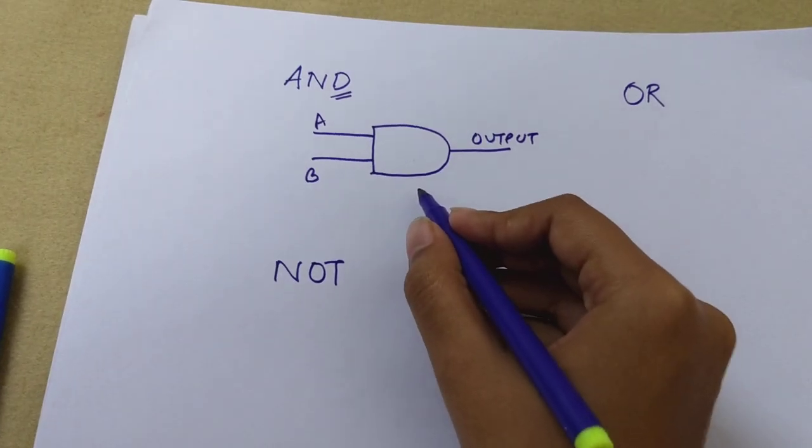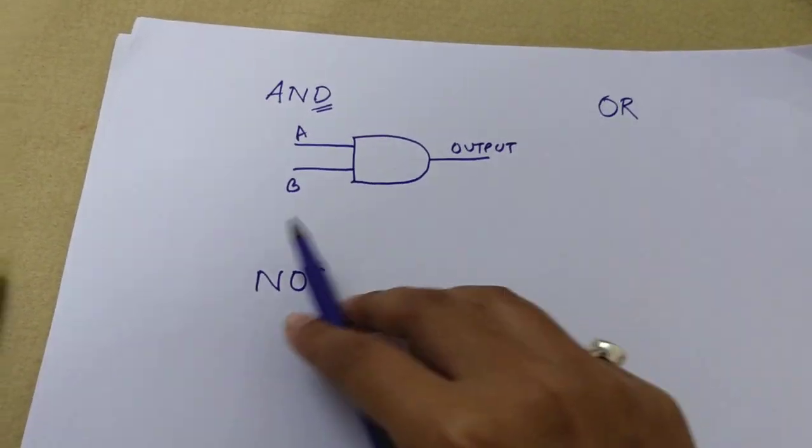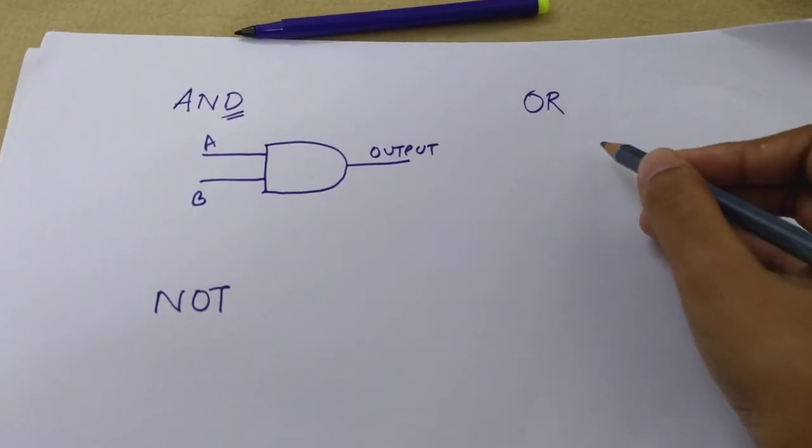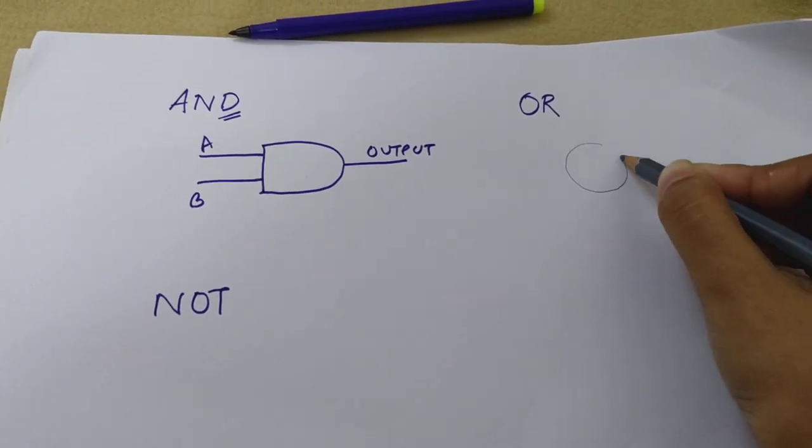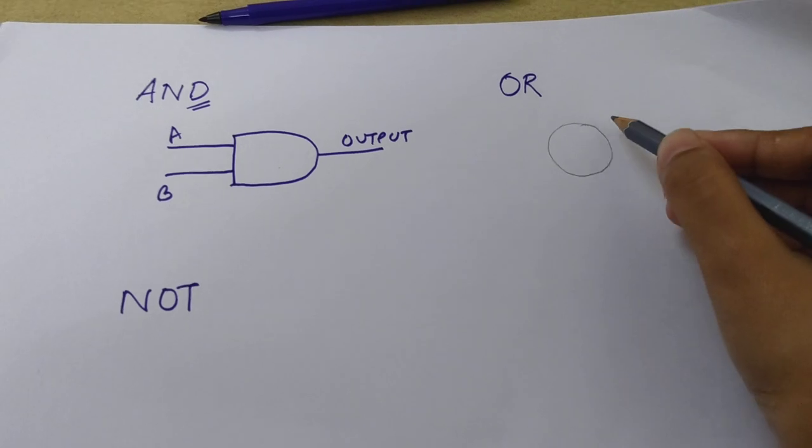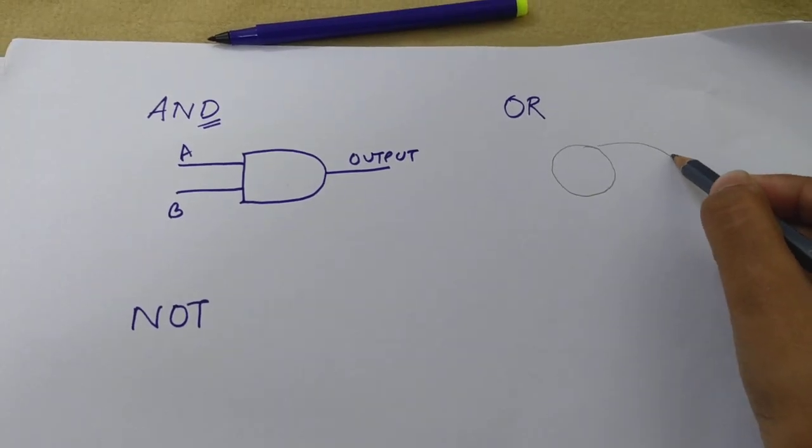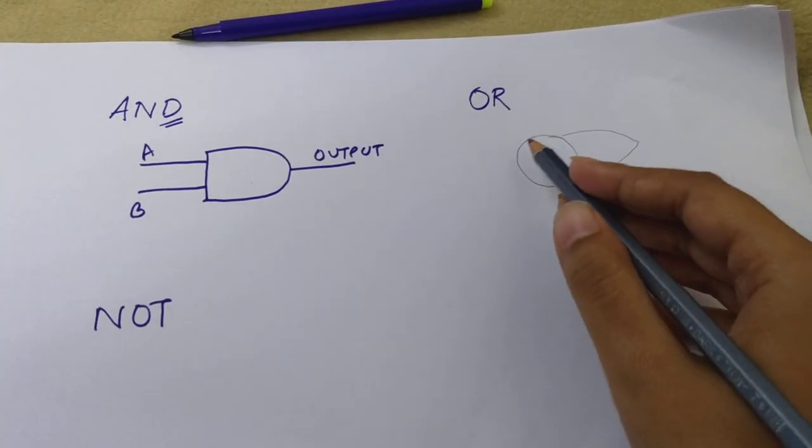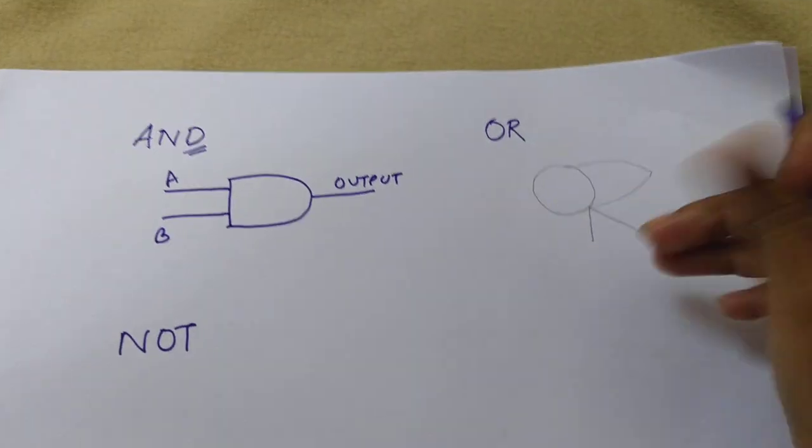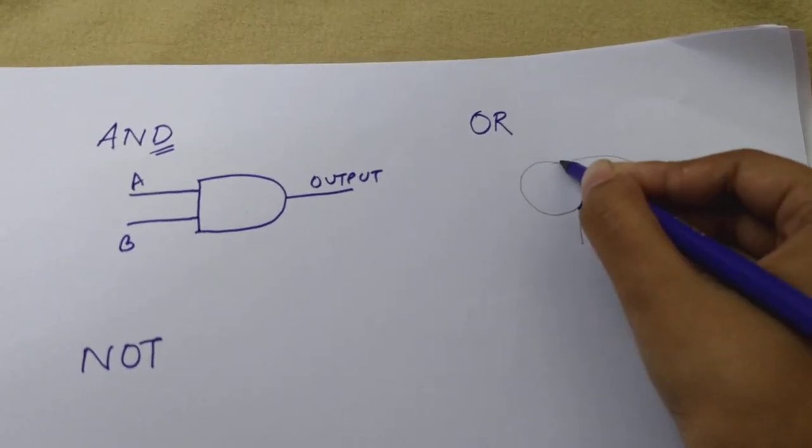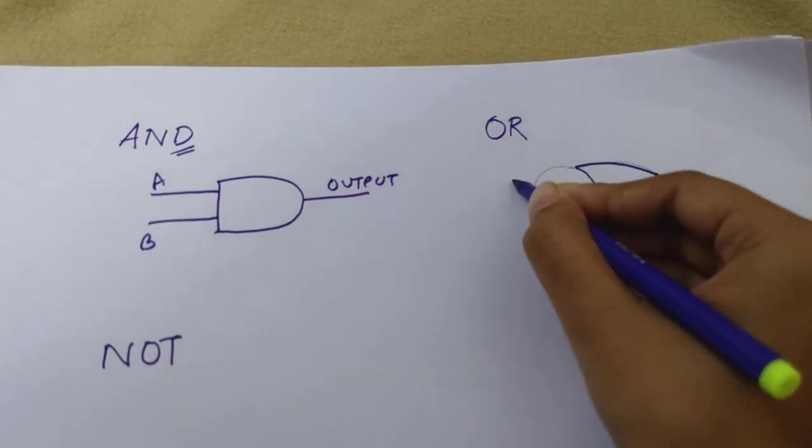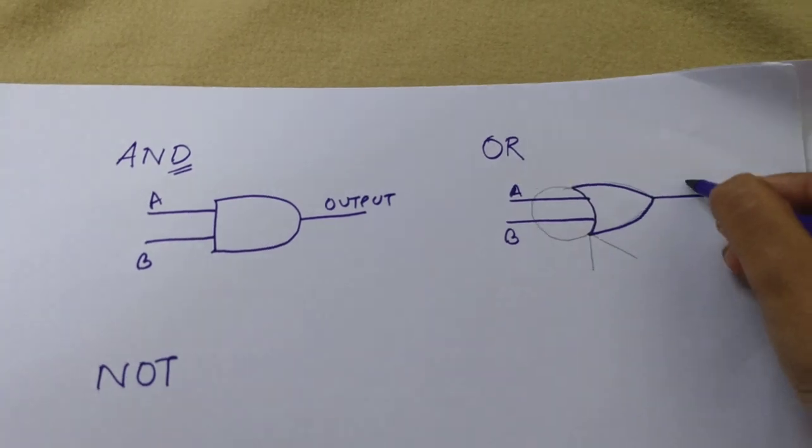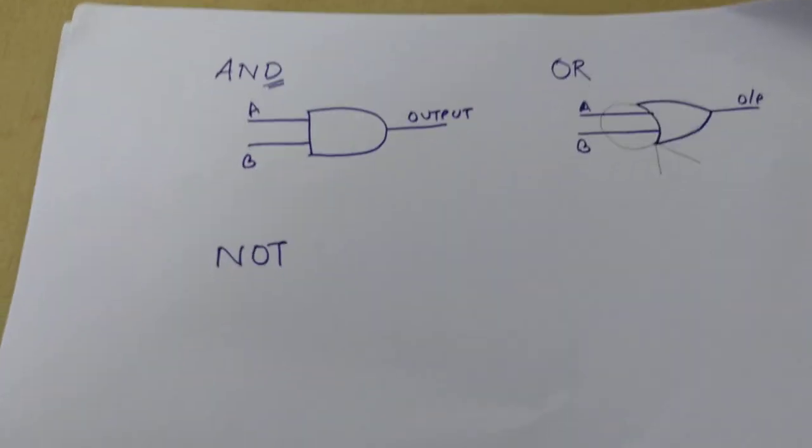How to remember the symbol for OR gate? Let's write with the pencil first. OR has an O, so draw the O and write R. Now erase these three and keep what is important. This is your OR gate with two inputs and one output.